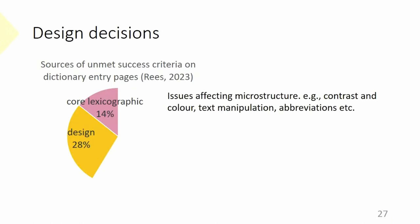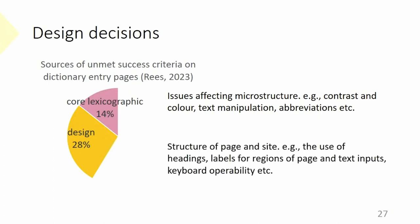This leaves core lexicographic issues affecting the microstructure — things like contrast and color, text manipulation, and abbreviations. Abbreviations are really important in dictionaries but quite inaccessible. If abbreviations must be used, the full form of the word should be given as alternative text. Design relates to the structure of the page: the use of headings, labels for regions of the page, text inputs, and keyboard operability.